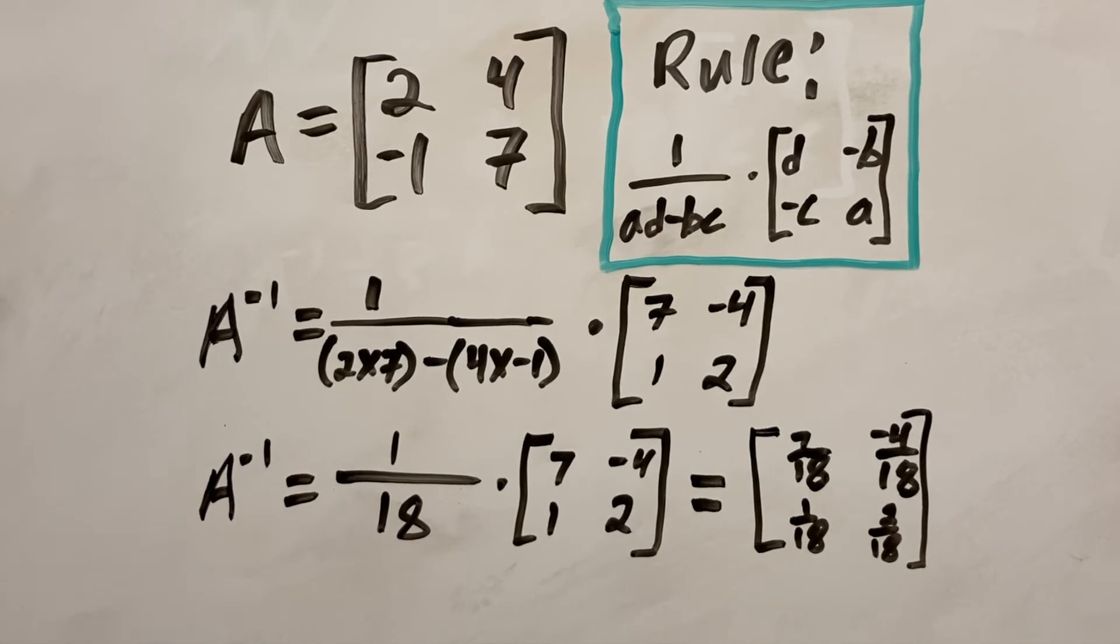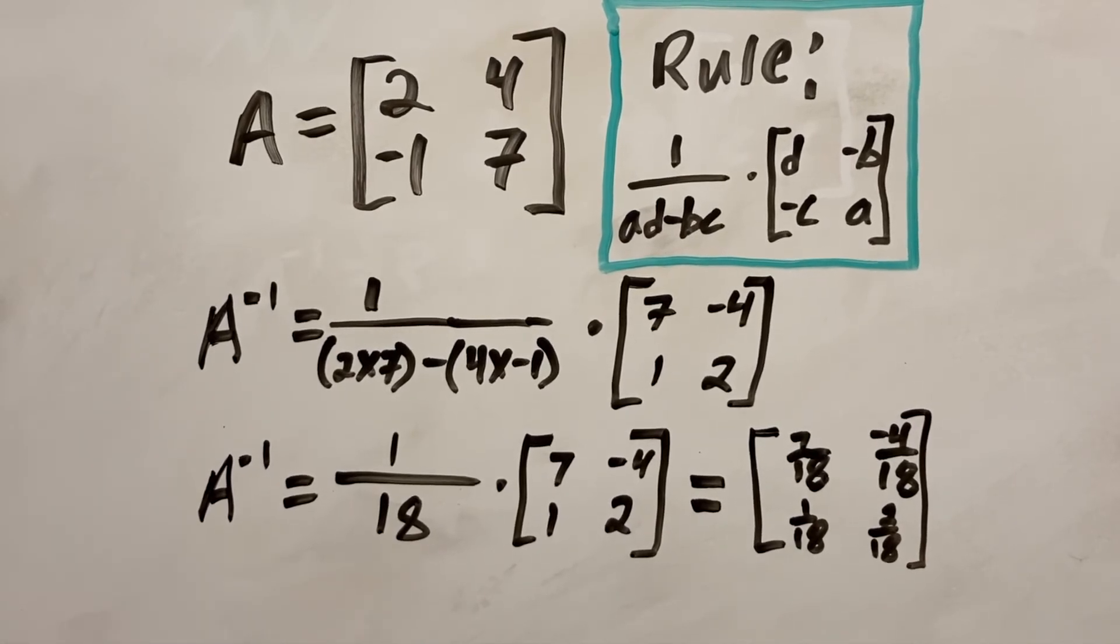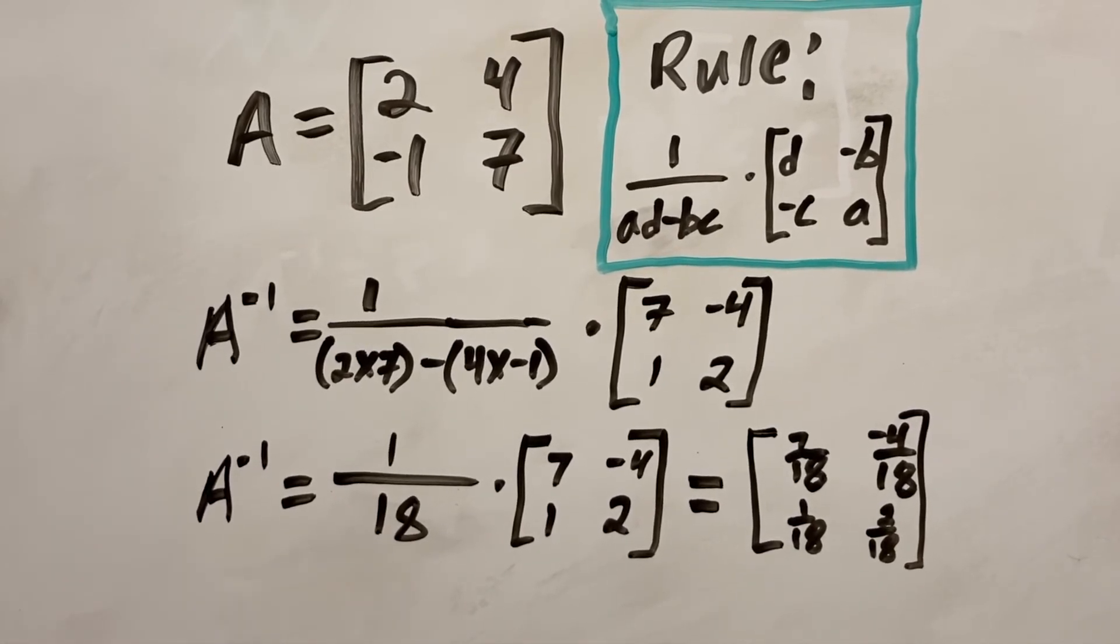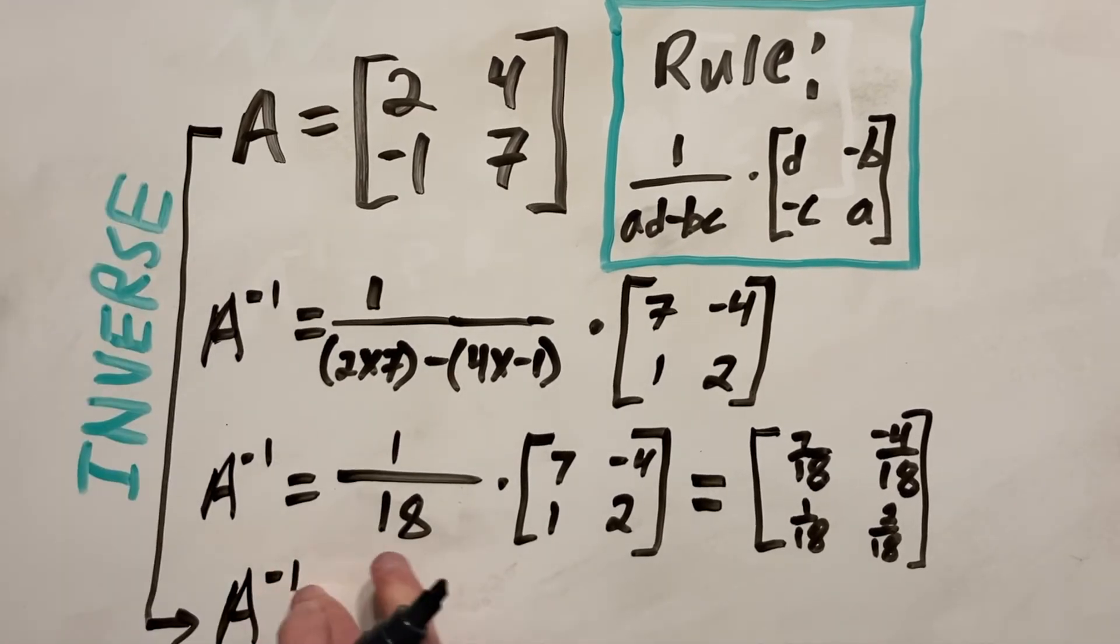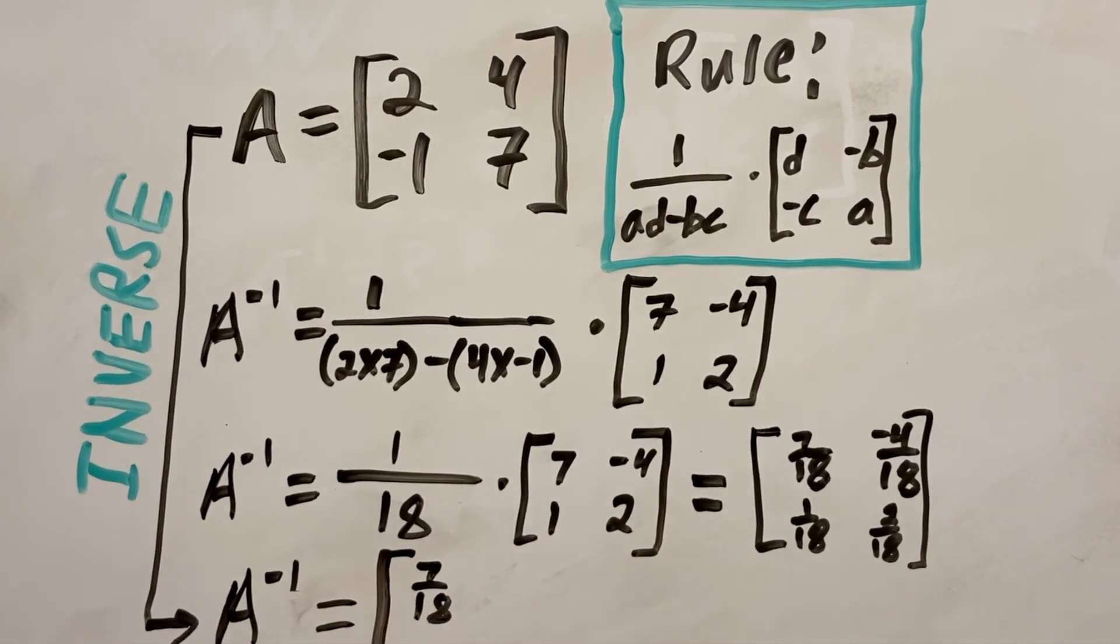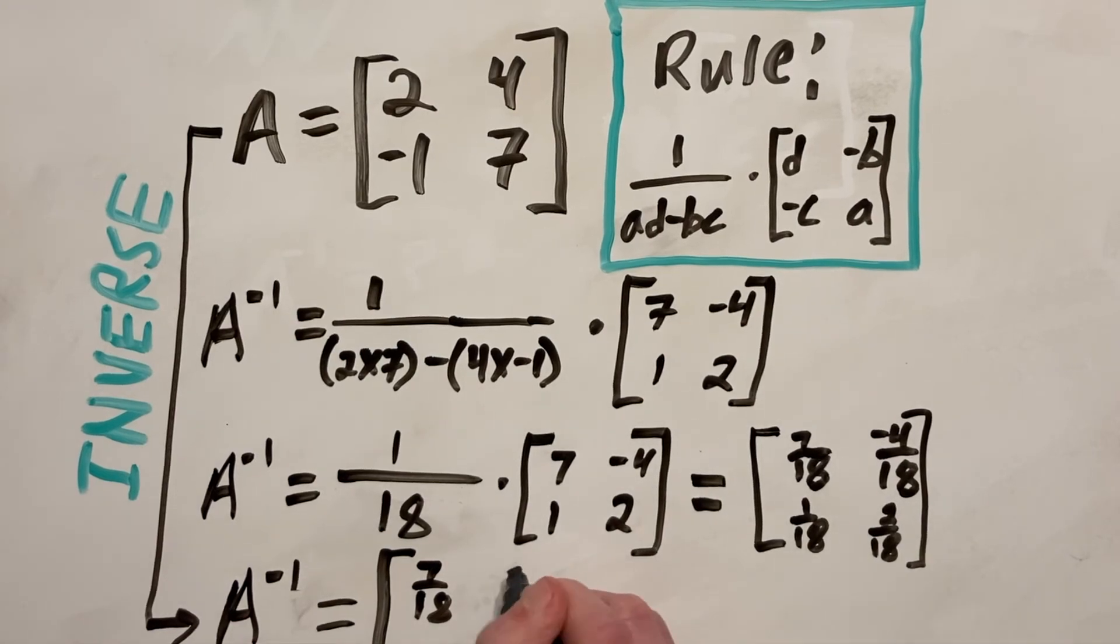So it seems like we're done, but the final thing you're going to want to do is simplify this, and then you will have the best answer possible. So if we simplify this, we will get our inverse of A, and that will give us 7 over 18, so that can't be simplified. But negative 4 over 18 can be, as they can both be divided by 2 to give us negative 2 over 9.